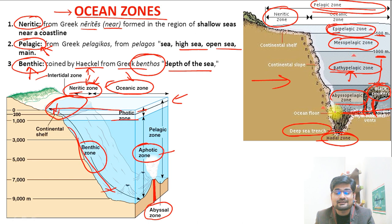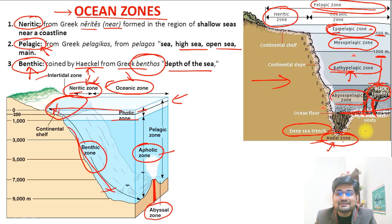Finally, you have the hadal zone, which is part of the deep sea trenches beneath the ocean abyss. Remember Hades, the Greek god of the underworld — that is how the name hadal comes. So these are the zonations of the oceans in terms of depth, nearness to coast, and distance from coast.